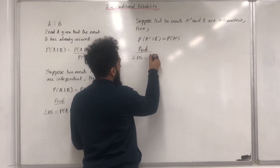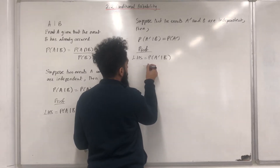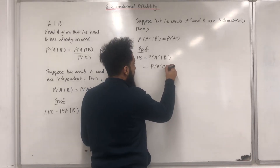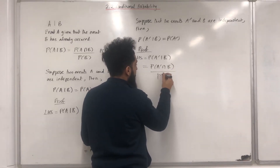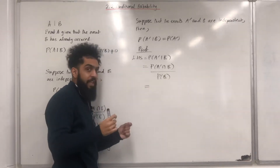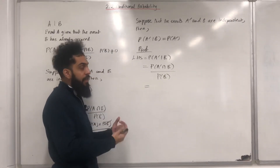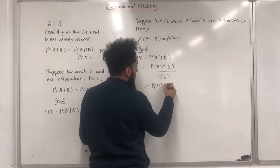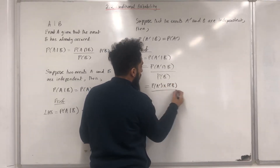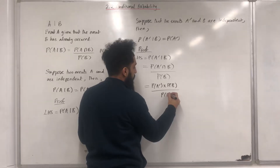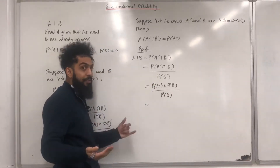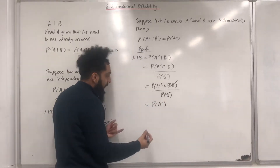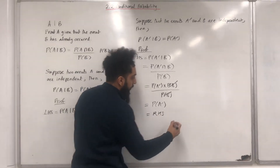Left hand side, we have probability not A given B. Using the conditional probability formula, this is equivalent to probability not A intersect B divided by probability B. Because the events not A and B are independent, probability not A intersect B is the same as probability not A multiplied by probability B, over probability B. So, we can see that probability B will cancel, leaving us with probability not A, which is precisely the right hand side. End of proof.